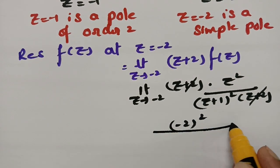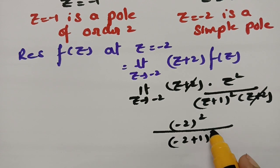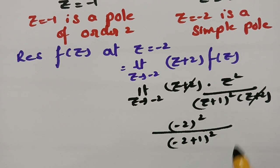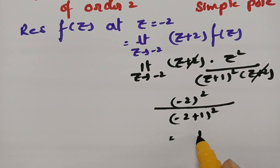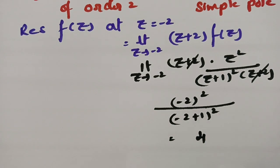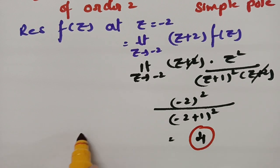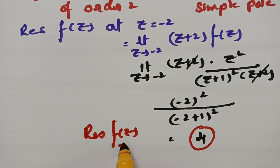This gives us (-2)² / (-2+1)² = 4 / (-1)² = 4 / 1 = 4. So we got the residue of f(z) at z = -2 equal to 4.